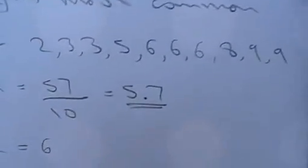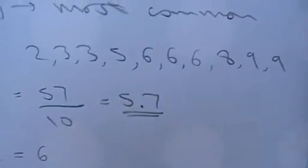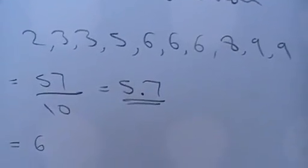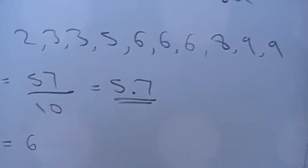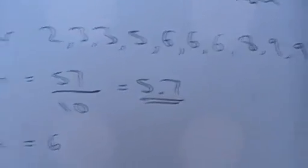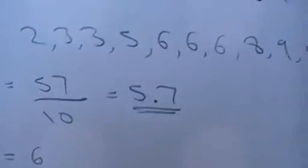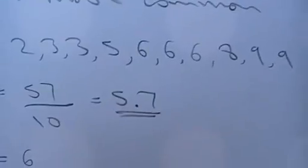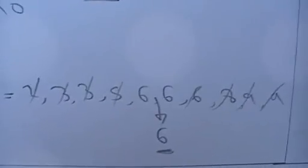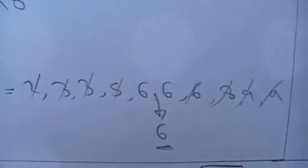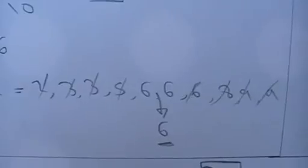So if I had this data here, the mean total is 57 divided by 10 because there are 10 numbers, which is 5.7. The mode, the one that occurs the most, is 6. And the median: get all my data in order, go to the middle, and the middle of 6 and 6 is 6, so the median is 6.